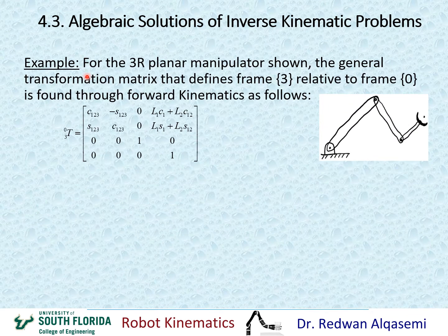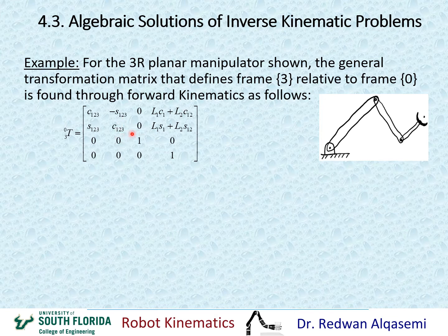For this example, for the 3R planar manipulator shown, the general transformation matrix that defines frame 3 relative to frame 0 is found through forward kinematics as follows. This is the transformation matrix that defines frame 3 relative to frame 0, and as we can see, we have rotation about Z and translations about X and Y.